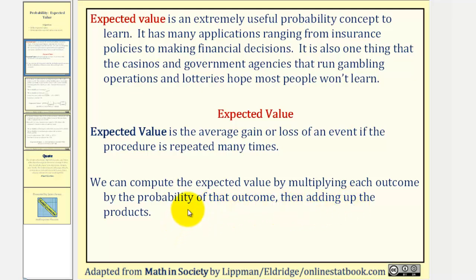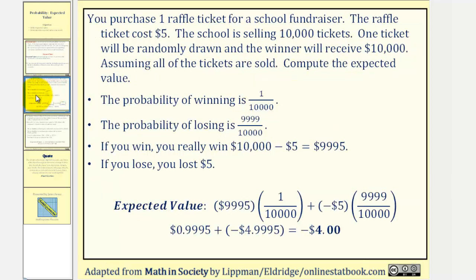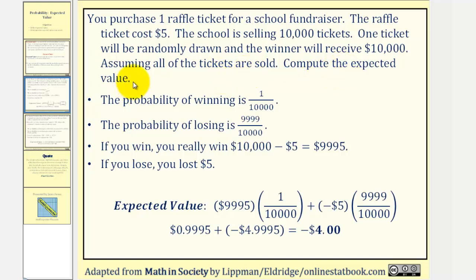Let's take a look at an example. You purchase one raffle ticket for a school fundraiser. The raffle ticket costs $5. The school is selling 10,000 tickets. One ticket will be randomly drawn and the winner will receive $10,000. Assume all tickets are sold and compute the expected value.